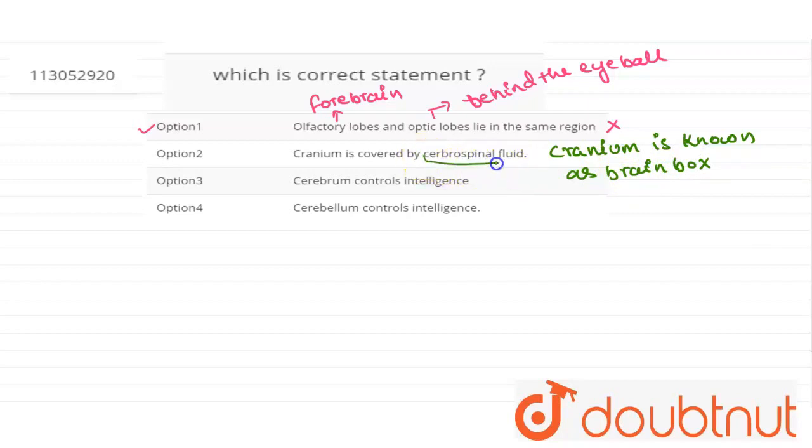And what is cerebrospinal fluid? This cerebrospinal fluid is present between the three layers of brain. So cranium is not covered by cerebrospinal fluid. This option is also not a correct statement.